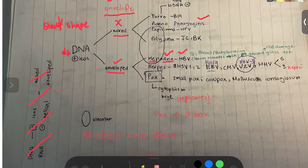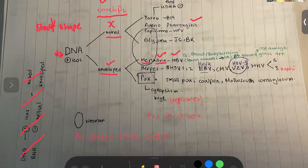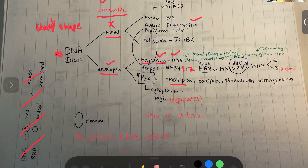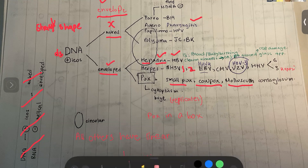The herpes viruses have a big section — one or two pages in First Aid dedicated only to them. These include HSV-1, HSV-2, EBV (also called HHV-4), CMV (cytomegalovirus), VZV (also called chickenpox virus or HHV-3), HHV-6, and HHV-8, which is also called Kaposi's sarcoma virus. Then the poxvirus has smallpox, cowpox, and molluscum contagiosum.